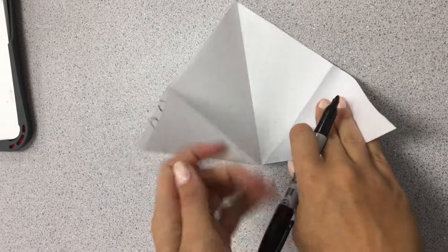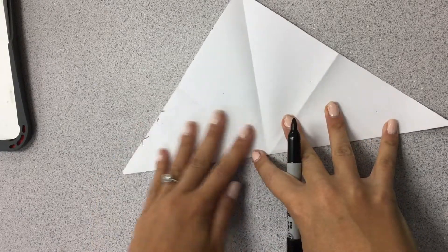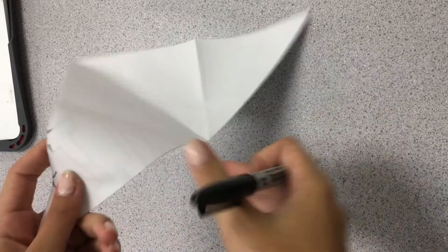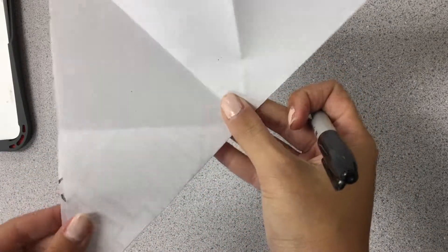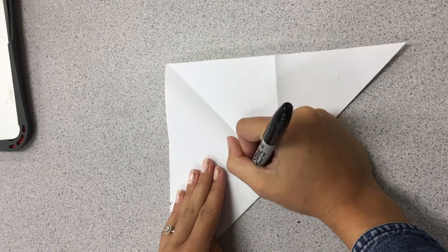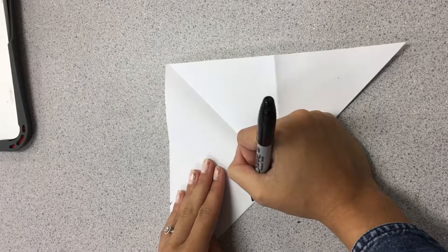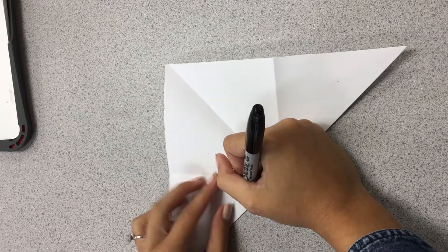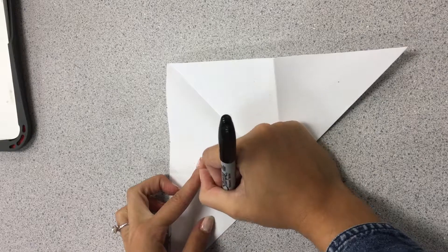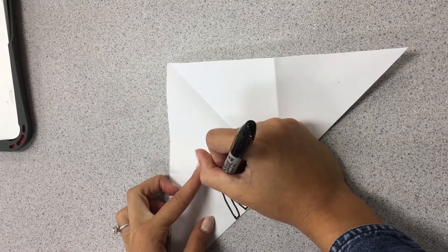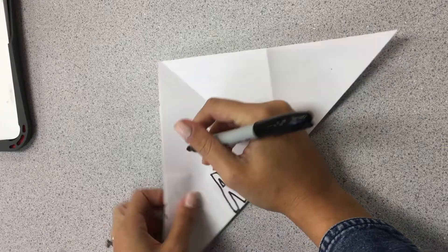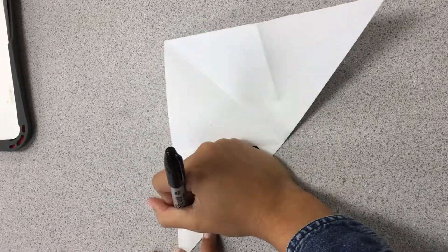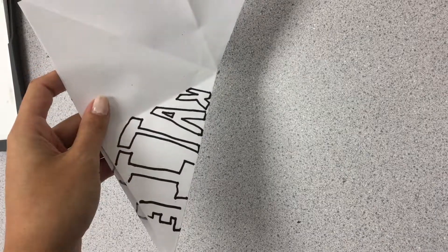And the cool thing you guys get to do now is you're going to unfold it. And then do you see how your name is kind of there? You are going to trace it again, but this time it's going to be backwards. So I can kind of see it through the paper. I might have to hold it down a little bit, or hold it up to the light. Okay, so there I have my name backwards.